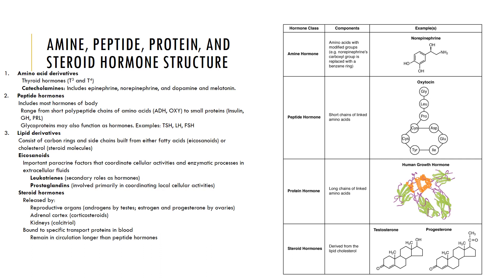Proteins are long chains of amino acids or polypeptides. Examples include small proteins like insulin, composed of 51 amino acids, or glycoproteins like thyroid stimulating hormone. Lipid derivatives consist of carbon rings and side chains built from fatty acid chains or cholesterol. Eicosanoids are a subclass of lipid derivatives built from fatty acid chains and include leukotrienes and prostaglandins. Steroid hormones are built from cholesterol molecules and include testosterone, estrogen, progesterone, corticosteroids, and calcitriol.